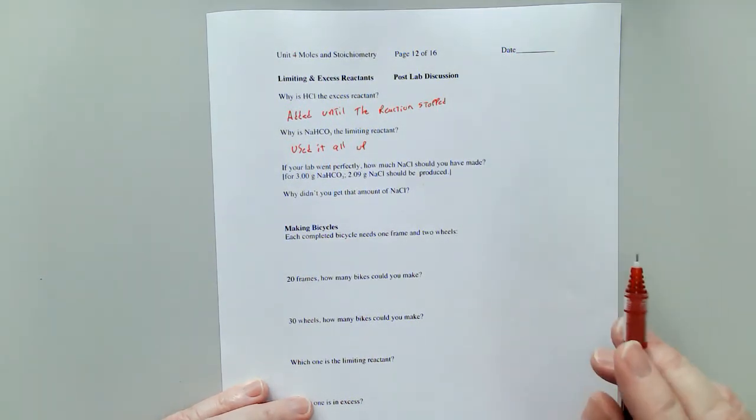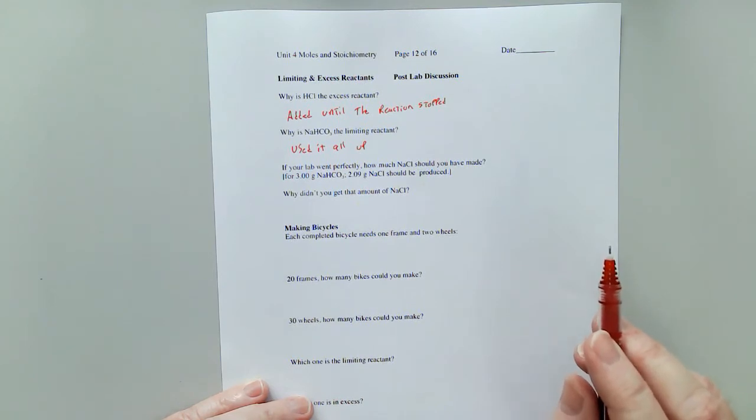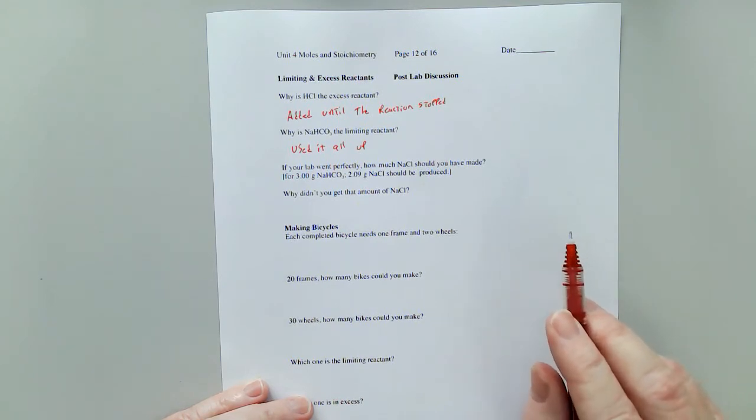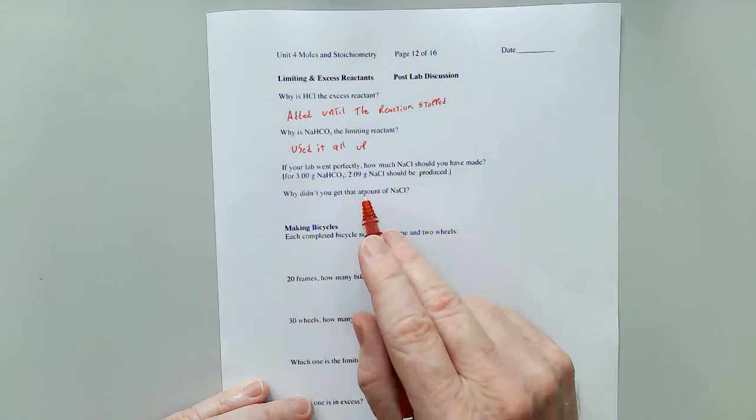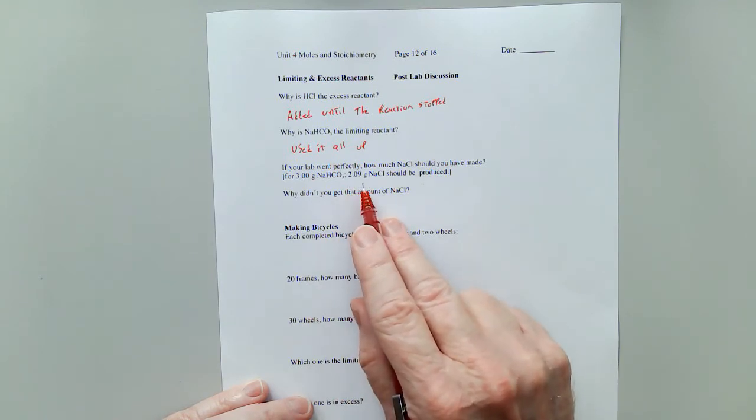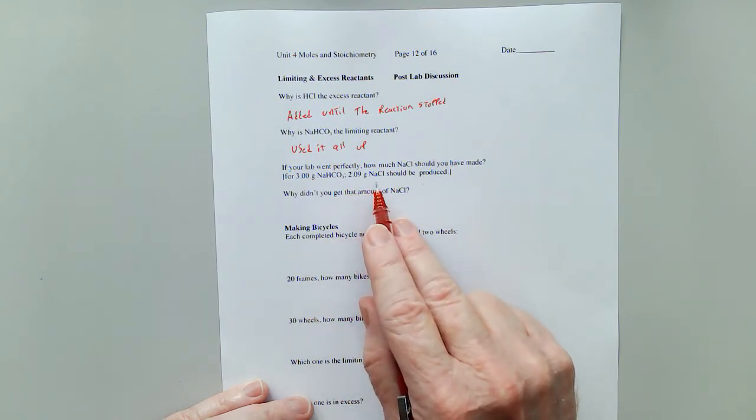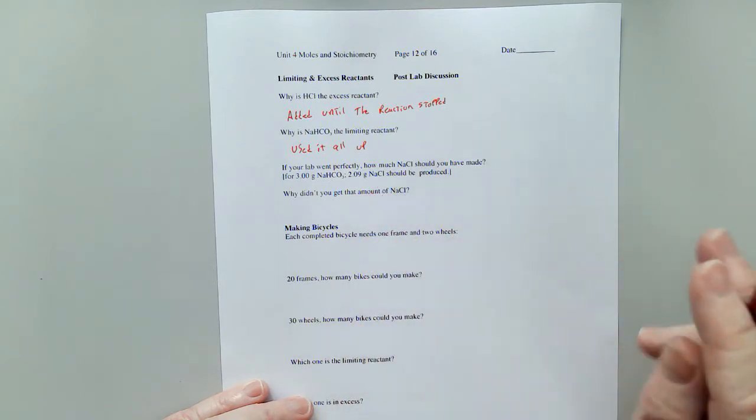Now let's talk about numbers a little bit. If you started out with the 3.00 grams of NaHCO3, you should have gotten 2.09 grams of sodium chloride. Now, that probably didn't happen.